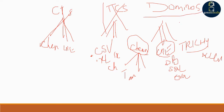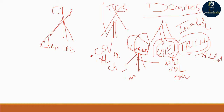If Dominos wants to understand the total sales in India, they have to integrate all the data from every individual city and state. They have to extract the data, process it, transform it, and then understand what happened and which city has the highest sales. To extract all these different formats of data, we use ETL tools.